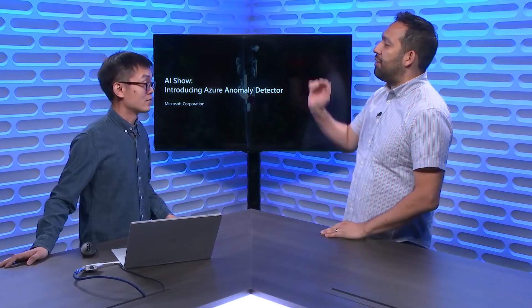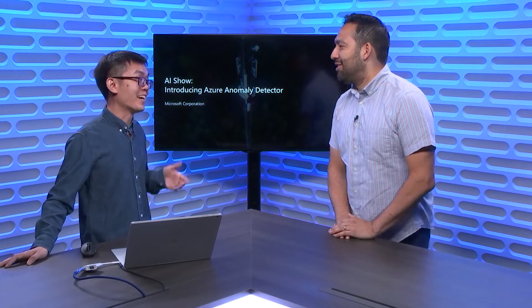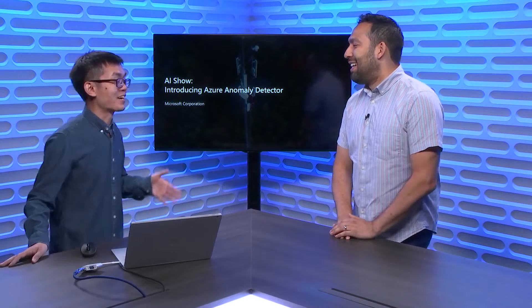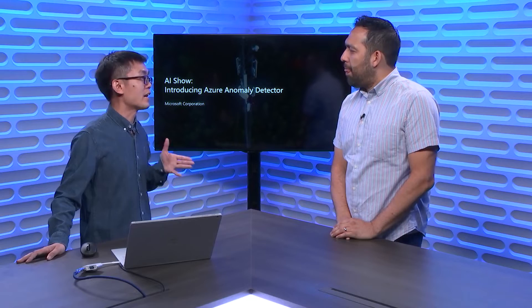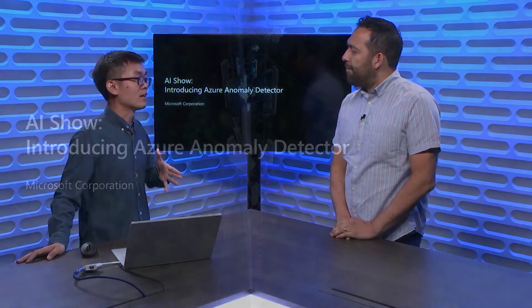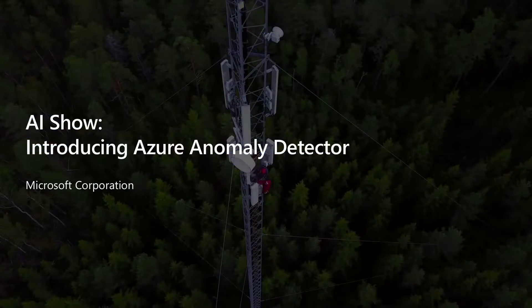This is a brand new thing. Why don't you give us a 10-second, 10,000-foot level overview of what it is? Sure. Anomaly Detector is basically an AI-powered API service that's going to detect anomalies from time series.